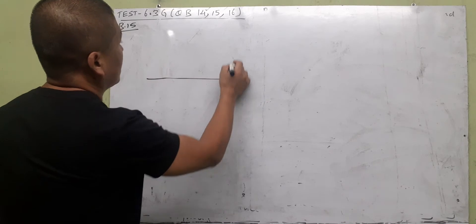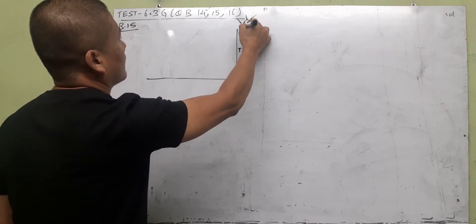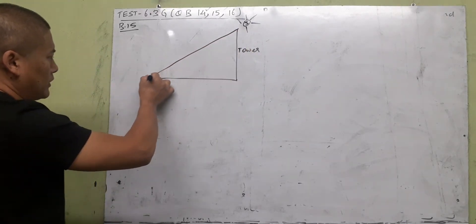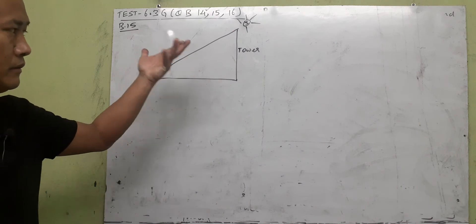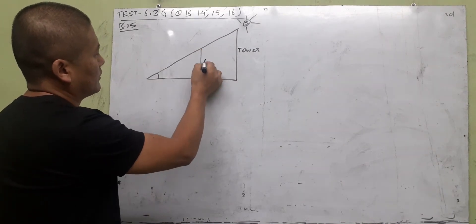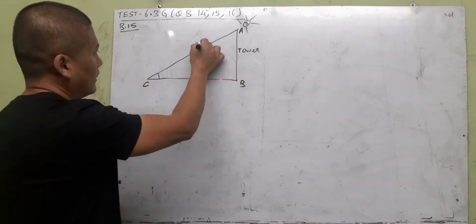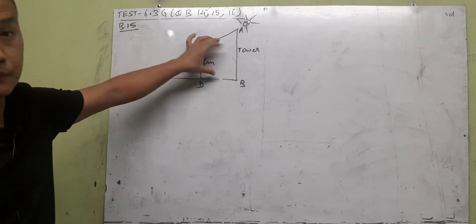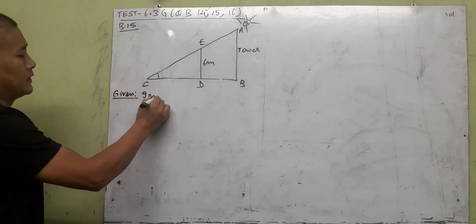Suppose this is the ground level and this is the tower. The sun is shining somewhere here. The ray cannot penetrate the tower; the ray will come from the top, brushing through the top and striking the ground. This is the elevation of the sun produced by the tower. At the same time, it means at the same place, there is another stick — a pole — which is six meters long.